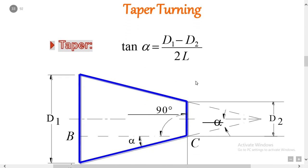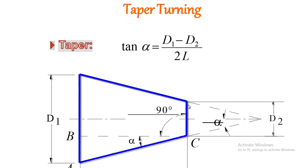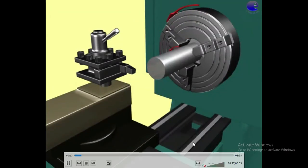Taper turning — a very important operation. In taper turning, a large variety of components used in engineering practice have conical shapes — with a gradual reduction in width or thickness along their length. Such components are known as tapered. The formula is: tan α = (D1 − D2) / 2L, where D1 is the larger diameter, D2 is the smaller diameter, and L is the length of the workpiece. Different types of operations are performed on the lathe as shown in the video.